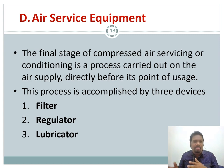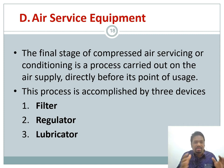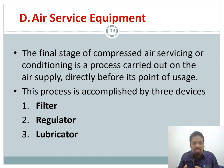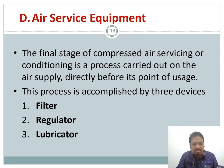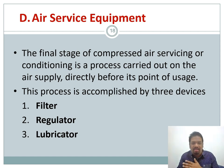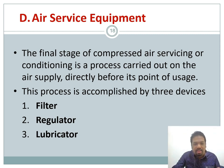We now move to the final part of compressed air conditioning: the air service equipment, also called the FRL unit — Filter, Regulator, and Lubricator. The three aims of the air service unit are: first, to provide suitable cleanliness to the air by filtering out unwanted contaminants; second, to stabilize air and ensure pressure does not exceed the maximum allowable for the pneumatic system; and third, to supply lubricating oil so that pistons and actuators operate smoothly without friction.